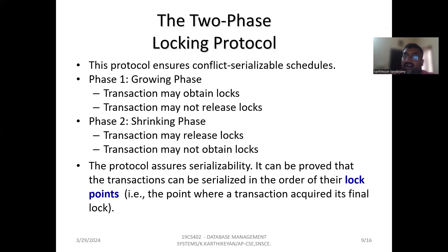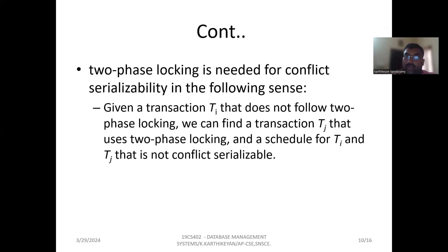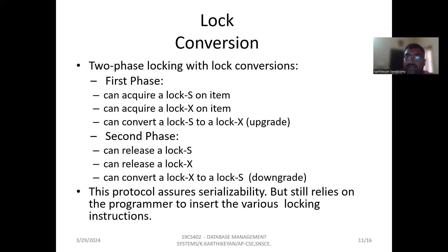Two-phase locking is needed for conflict serializability in the following sense: given a transaction Ti that does not follow two-phase locking, we can find a transaction Tj that uses two-phase locking and a schedule for Ti and Tj that is not conflict serializable.